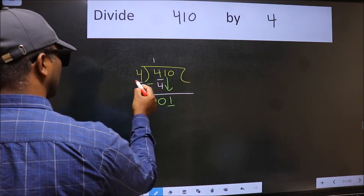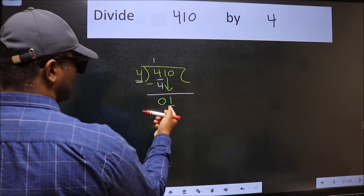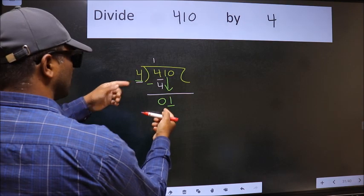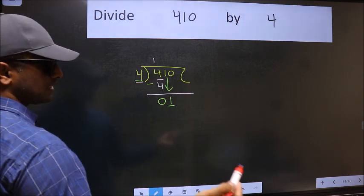Now here we have 1 and here 4. 1 is smaller than 4, so we should bring down the second number.